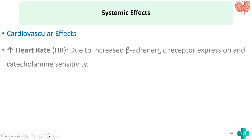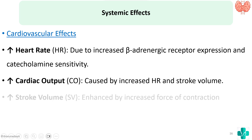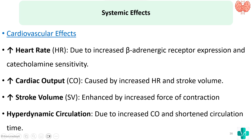Because of increased sensitivity to adrenergic receptors, there will be an increase in heart rate. Cardiac output equals heart rate times stroke volume. Since thyroid hormone increases both heart rate and myocardial contractility — thereby increasing stroke volume — both lead to increased cardiac output. On the whole, we have a hyperdynamic circulation whenever thyroid hormone is elevated, with increased cardiac output and shortened circulation time.